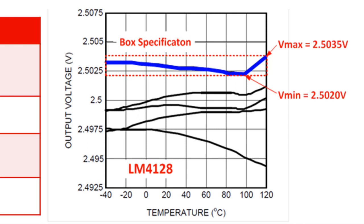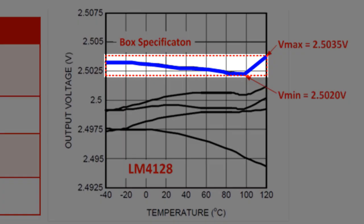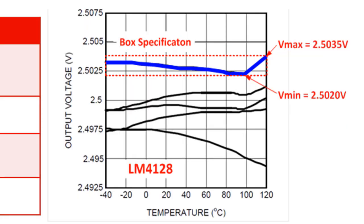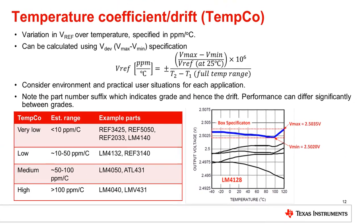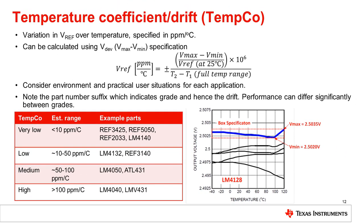Since the drift looks at the entire temperature range and the maximum reference variation, it creates a box around the reference variation. For this reason, this calculation method is called the box drift calculation. It is important to note that different grade devices will have different temperature coefficients based on their reference voltage deviation and operating temperature range.